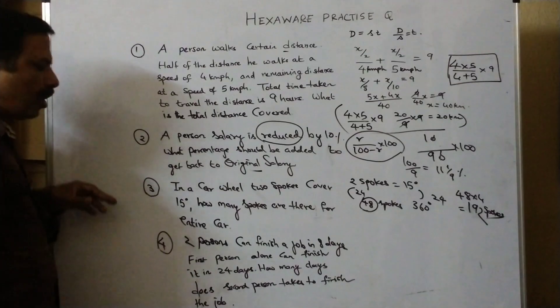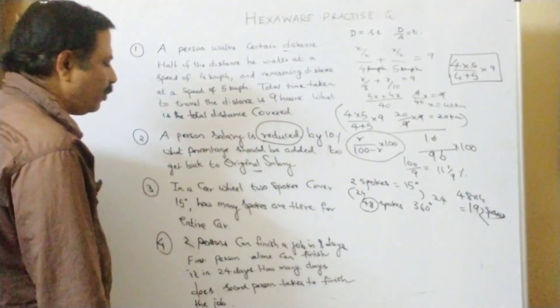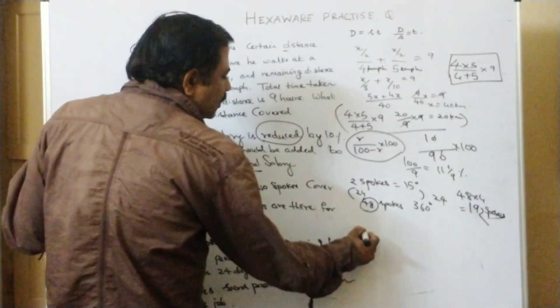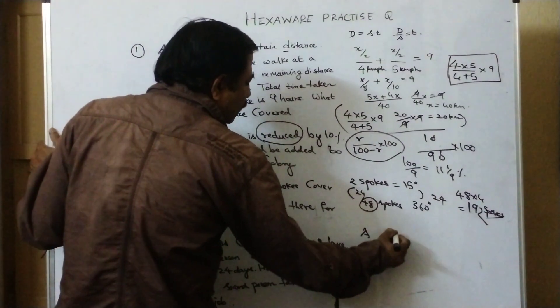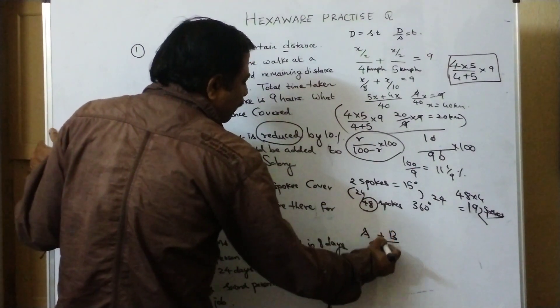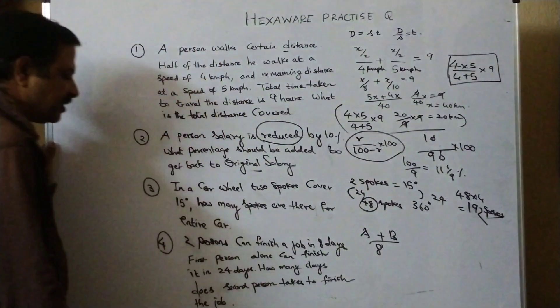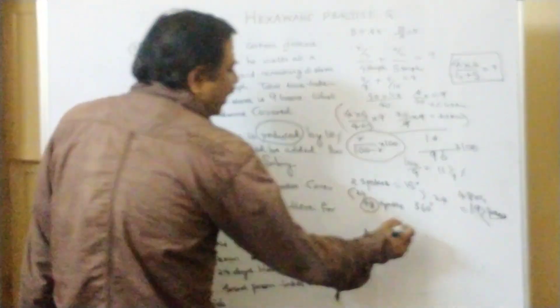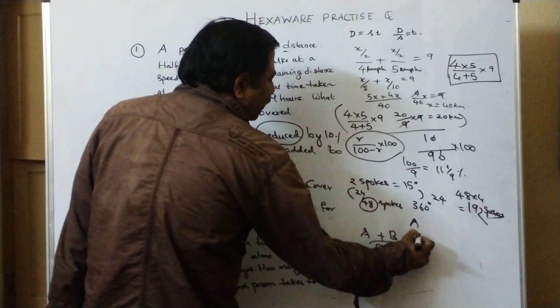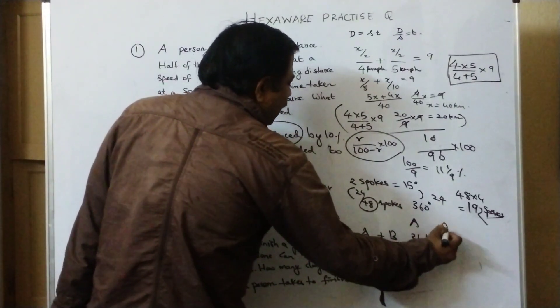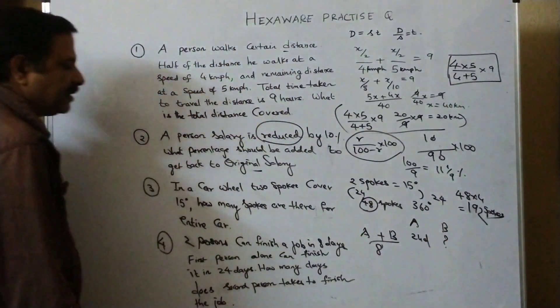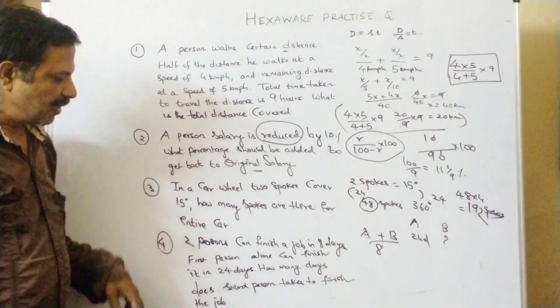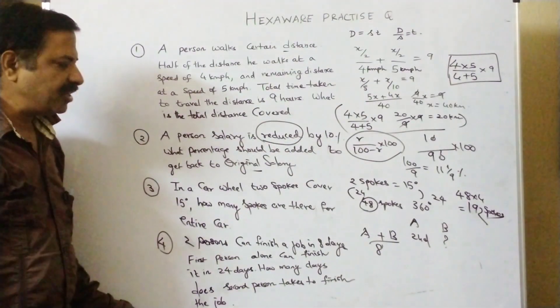Let us see question number 4. Two persons can do a job in 8 days. Suppose it is A. This is B. A plus B can do a job in 8 days. First person alone can do it in 24 days. A alone will do it in 24 days. B alone will do it in how many days?